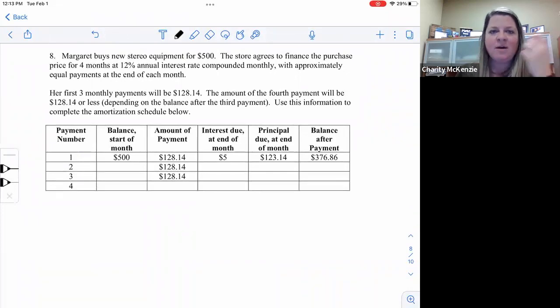So Margaret buys a new stereo equipment for $500. The store agrees to finance the purchase price for four months at 12% annual interest rate compounded monthly with approximate equal payments at the end of each month. Her first monthly payment will be $128.14. So you don't have to actually figure out her monthly payment. They did it for you. The amount of the fourth payment will be or less depending on the balance. So your last payment may be different. That's all it's saying.